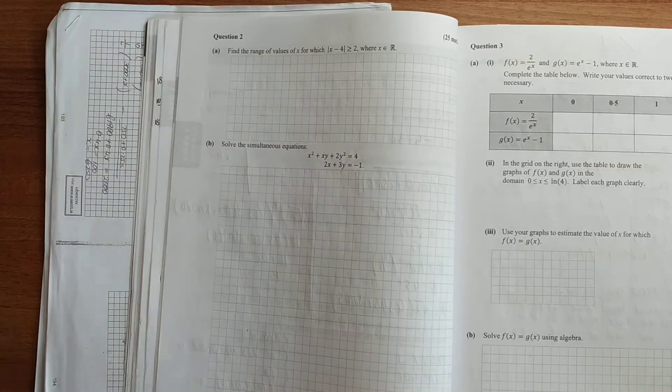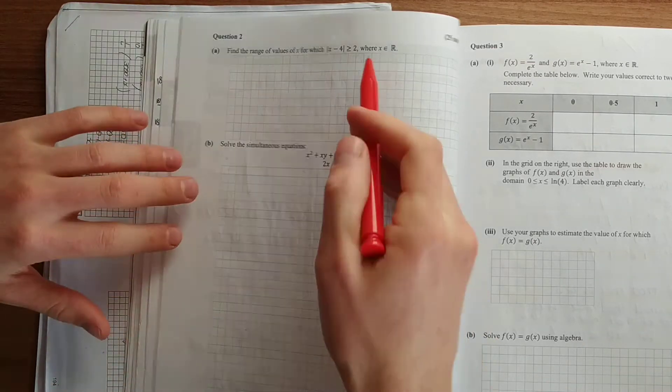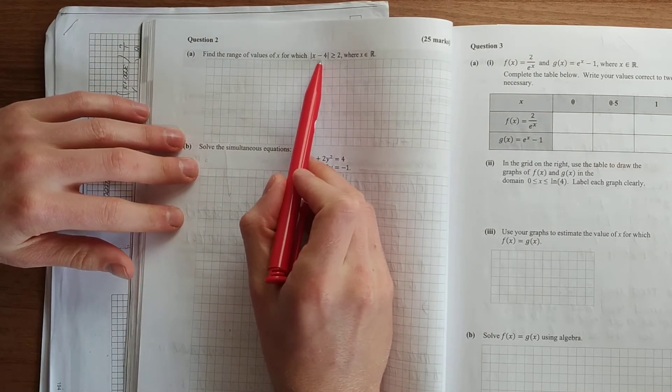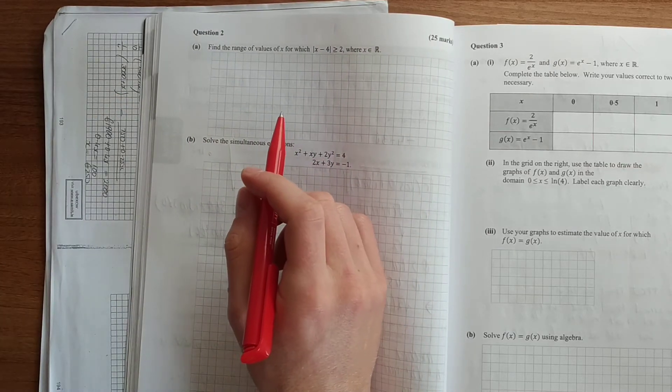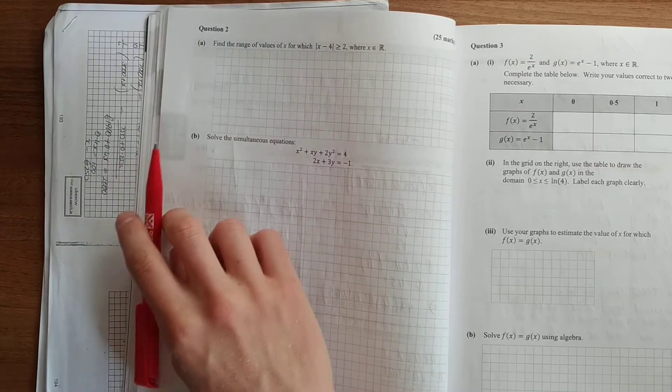In 2016, a nice real algebra question here. Find the range of values for which the modulus of x minus 4 is greater than or equal to 2. In order to solve the modular equations, all you've got to do is square both sides.